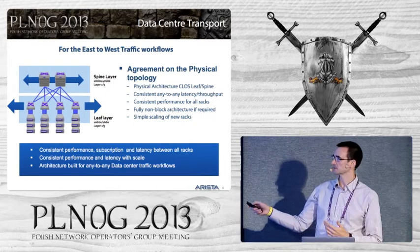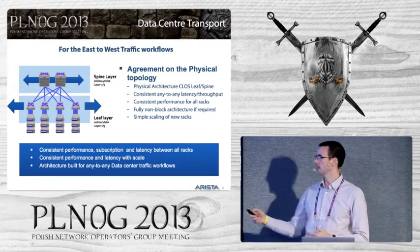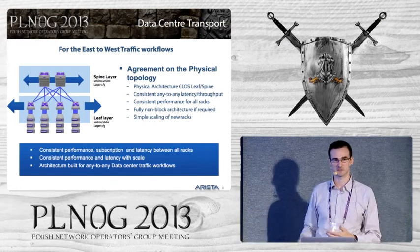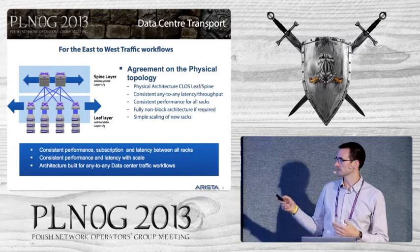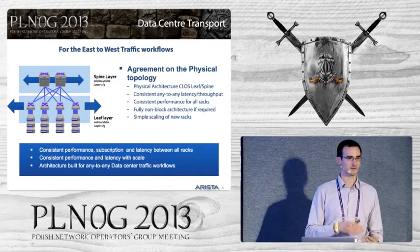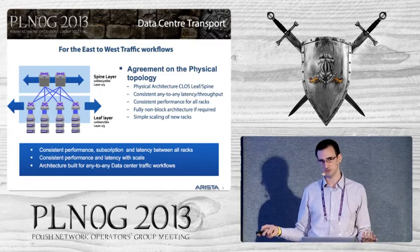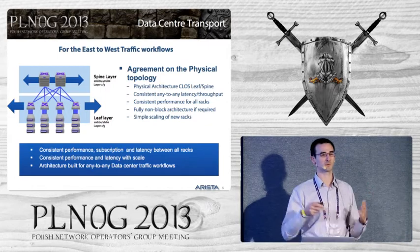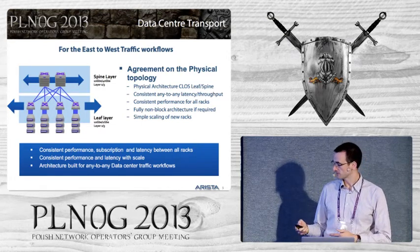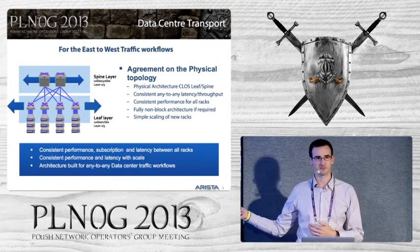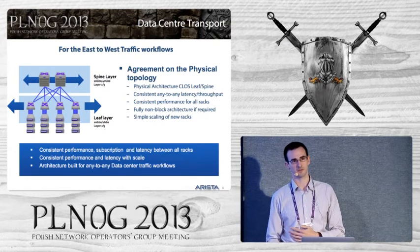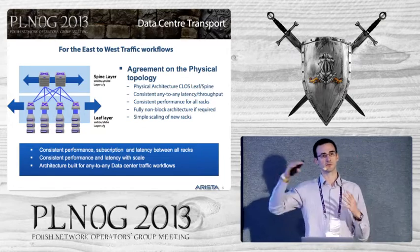This two-layer spine-and-leaf architecture scales horizontally: you can add ports by adding devices in the leaf, and maintain throughput as you scale by adding devices in the spine — like a fabric in a chassis. It provides consistent any-to-any performance in terms of bandwidth and latency. The architecture can be non-blocking or blocking depending on requirements, and it's very simple to grow because you just add devices at a linear rate, avoiding the big cost steps of creating new silos.